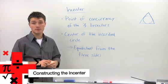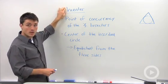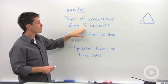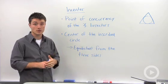One of the four special types of points of concurrency inside a triangle is the incenter. The incenter is the point of concurrency of the three angle bisectors. It is also the center of an inscribed circle.